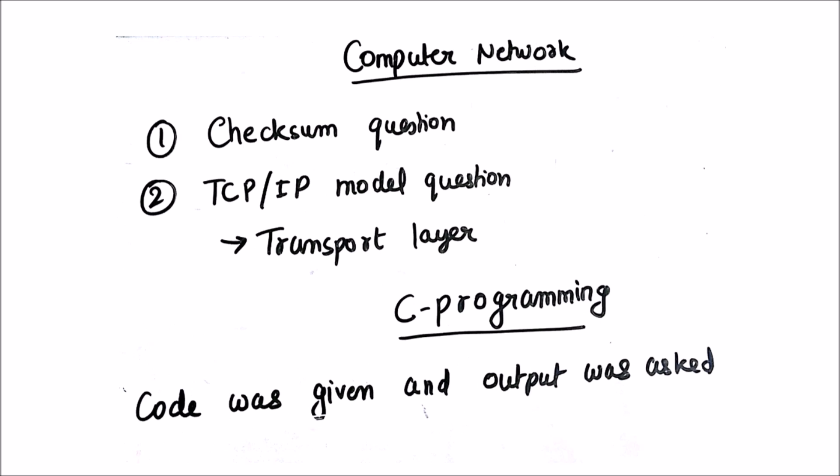In computer networks part, one question was asked from checksum and two three questions were asked from TCP IP model in which transport layer was mostly focused. In C programming, a code was given and output was asked.